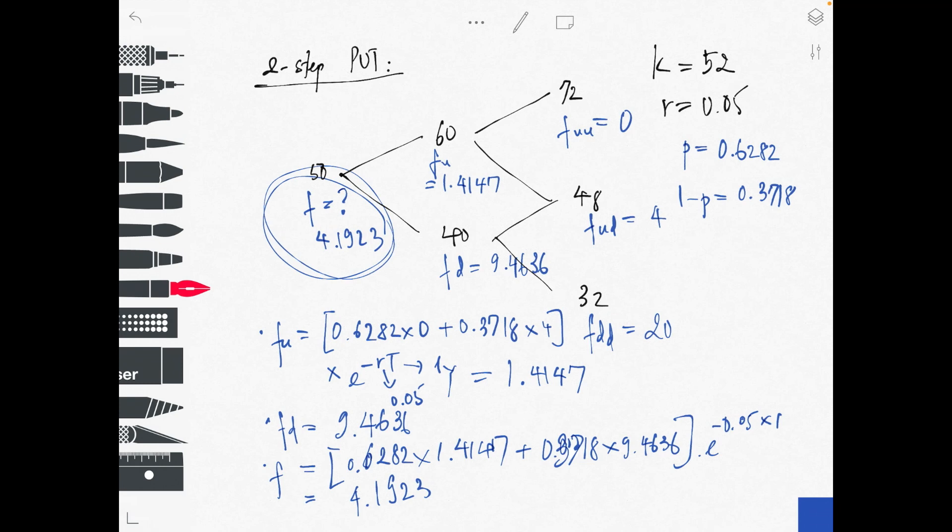So the put option value using the two-step binomial tree model is 4.1923. I hope you can review both the call and put option calculations to understand how to apply this model.